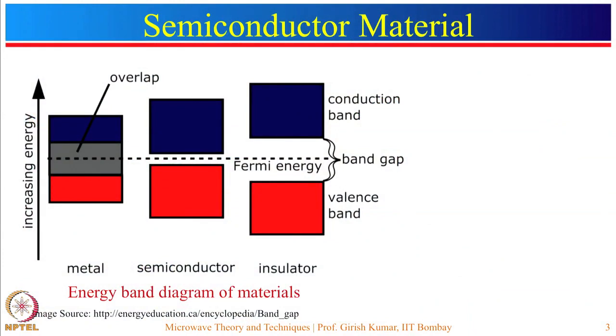In any atom, electrons can occupy only discrete energy levels. Now, if two or more such atoms are brought in close vicinity, the electrons at similar levels shift to higher energy levels. When many such atoms are brought close together, they form energy regions called bands. Two of the bands are the conduction band and the valence band, separated by a forbidden region, also known as the energy band gap or forbidden gap. This band gap plays a significant role in defining the conductivity of the material.